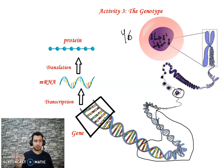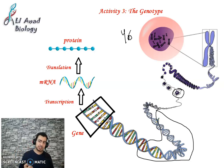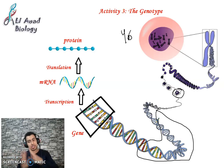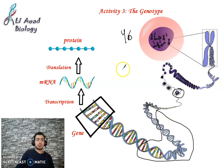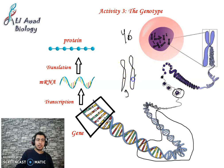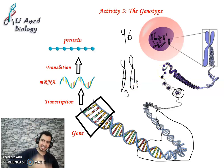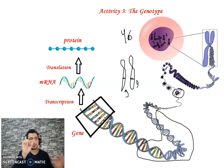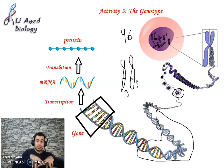Chromosomes carry genetic information — they are the carriers of genetic information because they hold the genes. Each chromosome carries a set of genes. For example, chromosome number 9 carries the gene of the blood group — two copies, one from the father and one from the mother. Each gene occupies a certain place at the level of the chromosome.